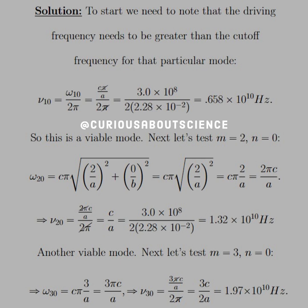So this is a viable mode. Next, let's test m equals 2, n equals 0. Omega comes out to 2πc over a. The 2π cancels. We're left with c over a, and this is equal to 1.32 times 10¹⁰ Hz, another viable mode.